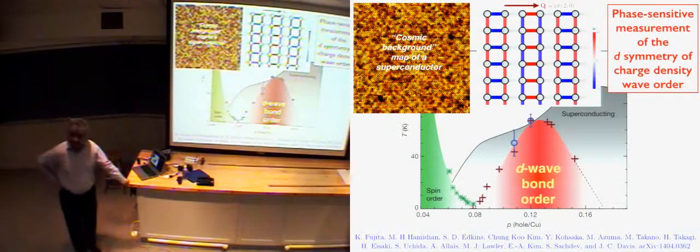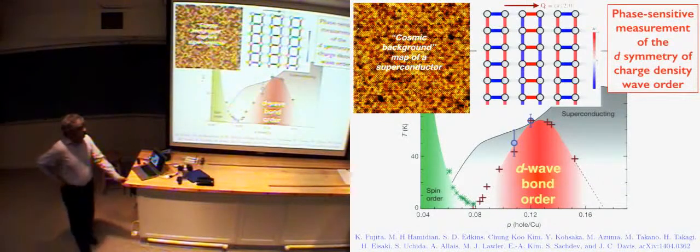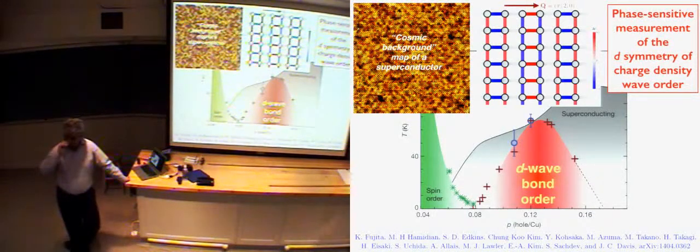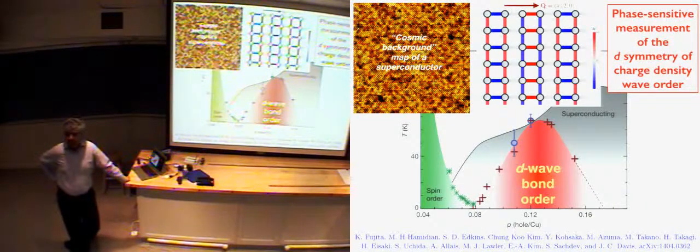So to conclude: I've talked about the origin of D-wave superconductivity, just reviewed that, and showed you that there's a very simple and natural partner of it — this D form factor charge density wave — which seems to be present unquestionably in certain cuprates. In the last part I argued it also helps explain many other mysteries, though that's of course a little more speculative. The answer to this question mark — what is in the red region — is this D form factor charge density wave, which was just hiding in this map of a superconductor all along.